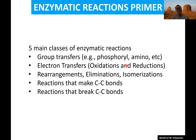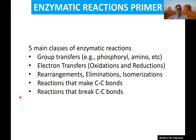In general, all of metabolism involves five main classes of enzymatic reactions. Group transfers — like the phosphorylations we've already seen with ATP. Electron transfers — the redox reactions. Rearrangements and eliminations, where pieces are moved around on the same molecule. And very important reactions that break carbon–carbon bonds — we expect to see one in glycolysis where the six-carbon glucose is broken into two three-carbon units. In biosynthesis and anabolism, we'll see the reverse: reactions that make carbon–carbon bonds.